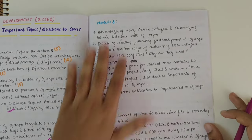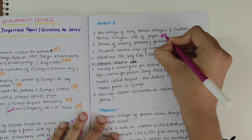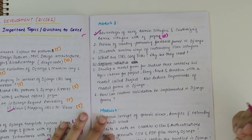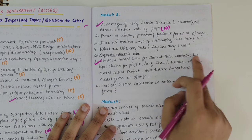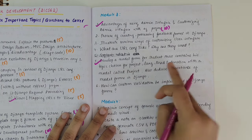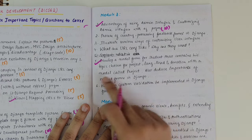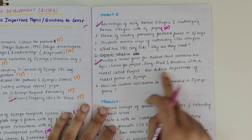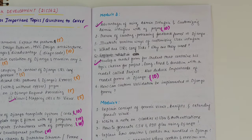Now in third module, we have admin interface and customizing admin interface, 10 marks, a must question. Then we have a program also, developing a model form for student that contains his topics chosen for project, language used, and duration within a model called project. So also deduce importance of model forms. This is a 10 mark program to be written.